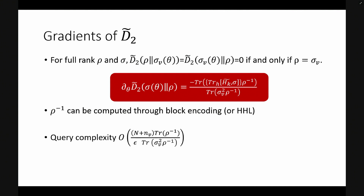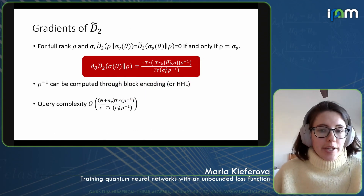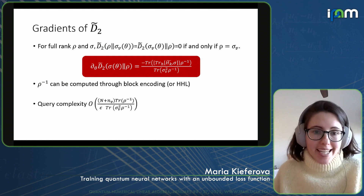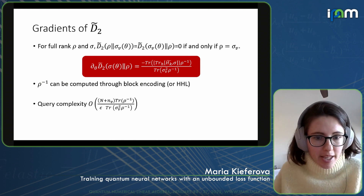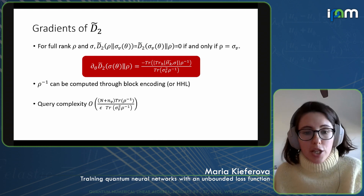The expression requires us to compute an inverse, which can be done through block encoding. However, this would require a fault-tolerant quantum computer and algorithms such as QSVT or similar approaches requiring a relatively large number of gates. We can however compute the query complexity of our algorithm — the number of times we would need to have access to the quantum dataset — and give some estimates on a single computation of the gradient.